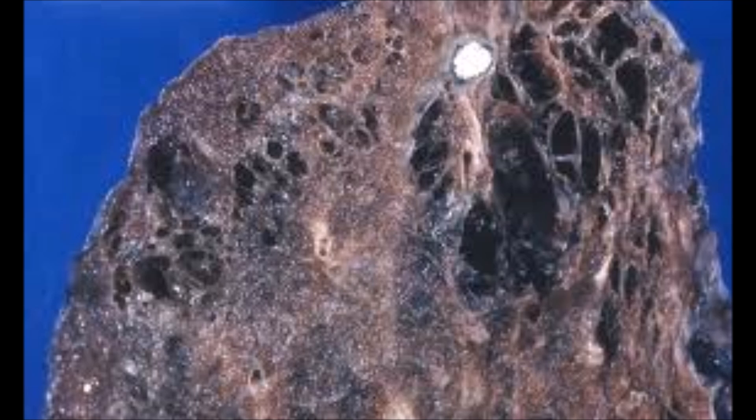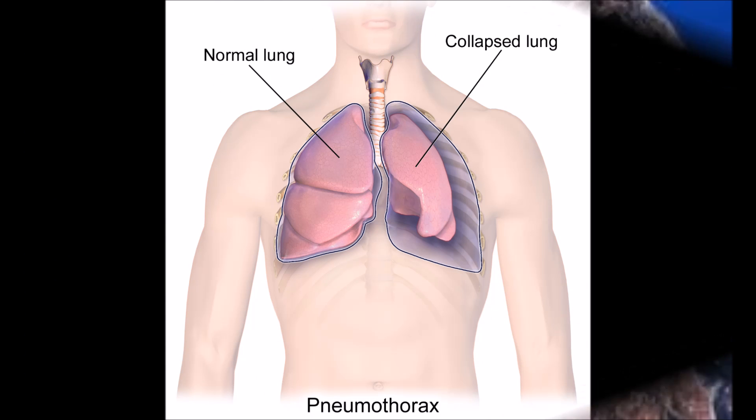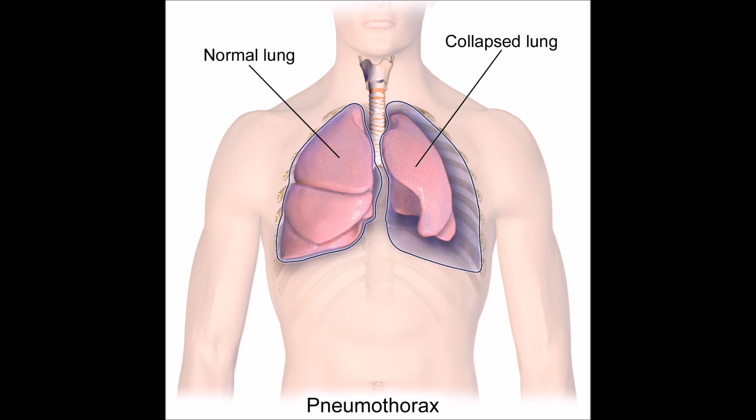Bullae, such as in an emphysematous patient, are also a contraindication. Pneumothorax could pop your lung. Additional contraindications include hypotension and simply being non-compliant with the mask.